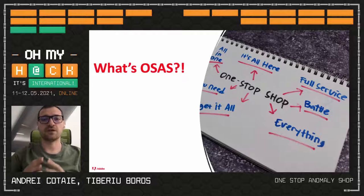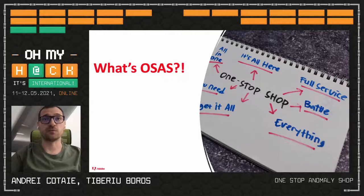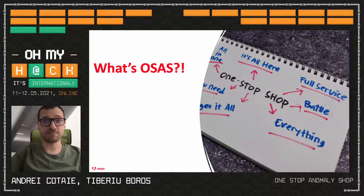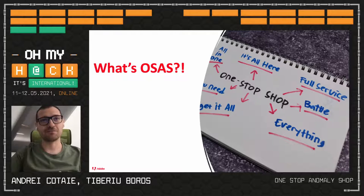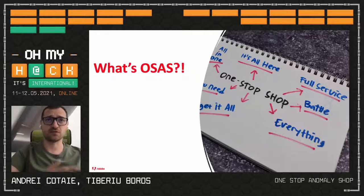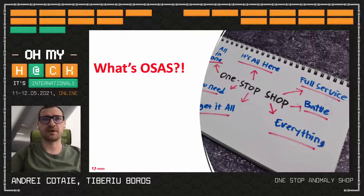So what's OSAS? OSAS stands for One-Stop Anomaly Shop. OSAS is a machine learning framework whose whole purpose is to detect anomalies. It's the open source project we just released, and this is actually the first place we're presenting OSAS. The whole framework is based on a couple of Adobe Security Intelligence Team's previous work, white papers, and some components from patents we filed.